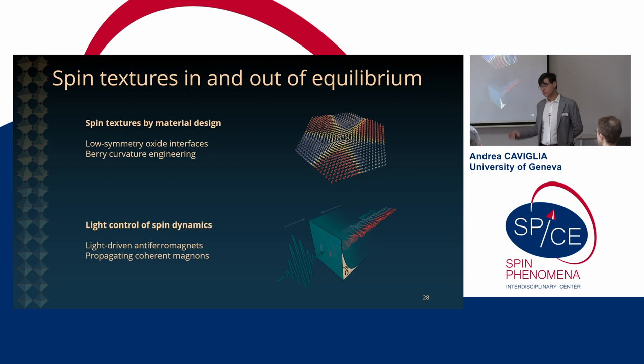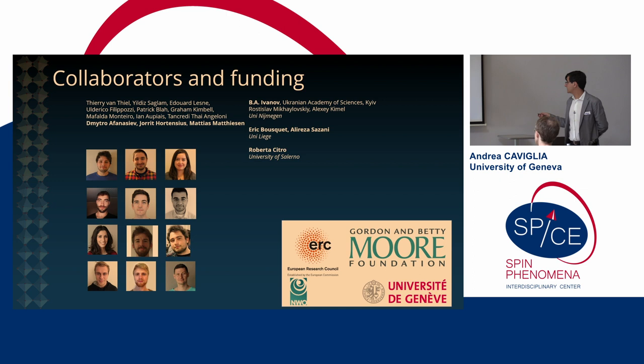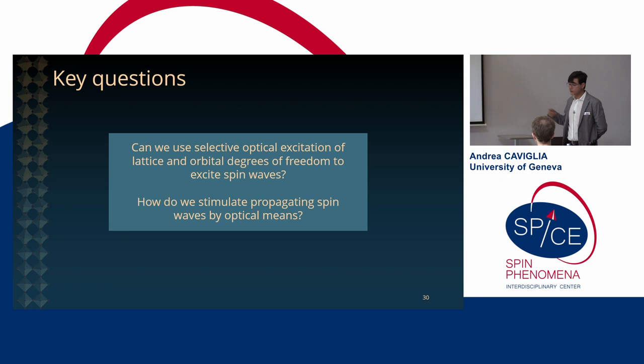Okay. Perfect. Then how much time do I have left? You have about six to seven. Perfect. Yeah. So in the second part of the talk I would like to emphasize a little bit out of equilibrium aspect. I'm going to show you mostly the work from the PhD of Matthias Matthiesen which is present here and from Ioritor Hortensius also that finished his PhD about a year ago. And I should acknowledge the theoretical collaboration with Boris Yifanov and Roberta Citro in particular for this project. And so here we want to use selective excitation of orbital degrees of freedom to investigate whether it is possible to excite spin waves and possibly even propagating spin waves in antiferromagnets.